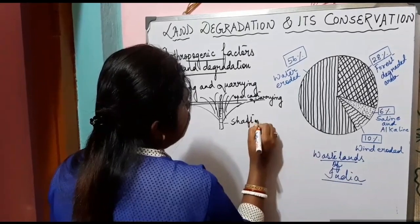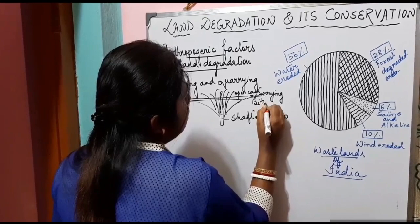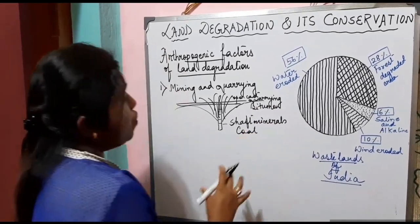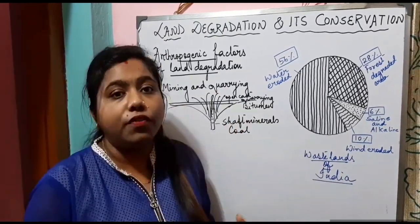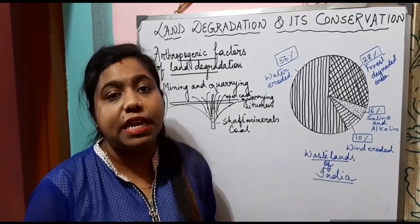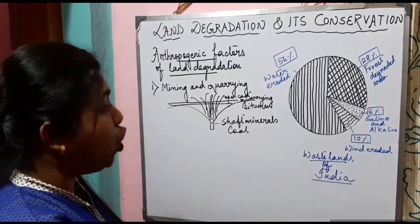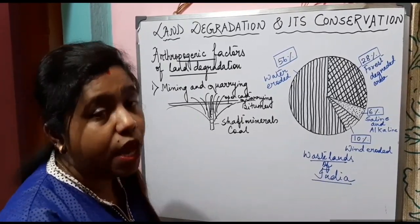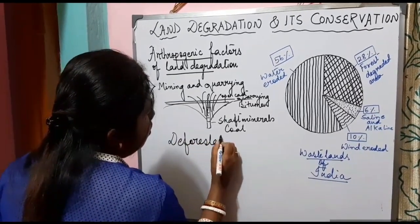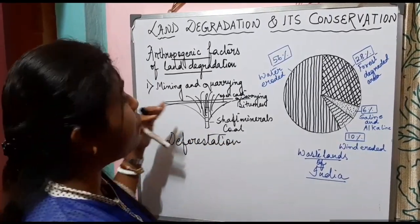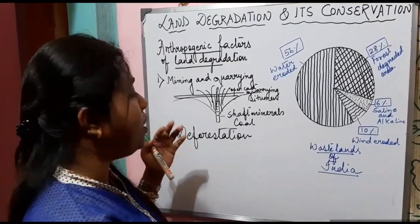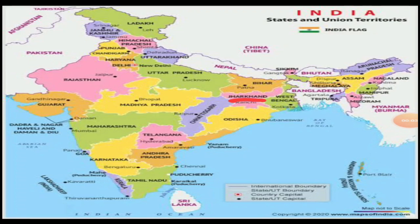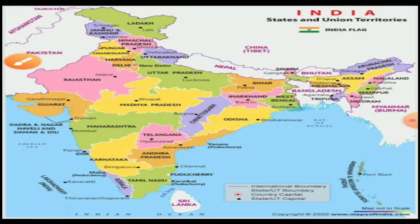For deep minerals, shaft mining is needed to extract them — for example, bitumen and coal. After mining work is done, the land where mining activities took place is left as it is, with deep scars and traces of overburden. Along with mining, deforestation is another effect, because in areas where mining activities take place, a large number of trees are cut down. The states of Jharkhand, Chhattisgarh, Madhya Pradesh and Odisha suffer land degradation due to mining and quarrying activity.